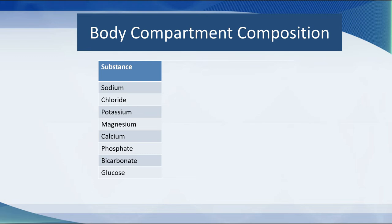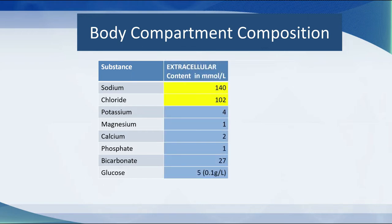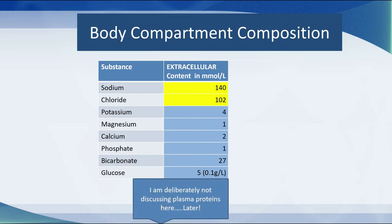Looking at the various body compartments, sodium and chloride are the big players in the extracellular space. The only comparably large electrolyte in the extracellular compartment is bicarbonate, which is a metabolic byproduct of carbon dioxide — it is not a salt, it comes from carbon dioxide.